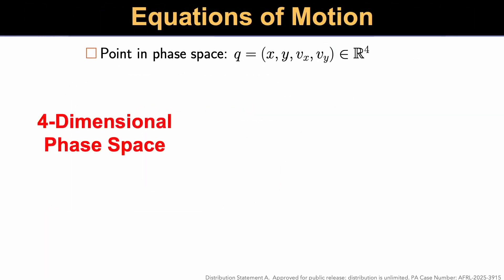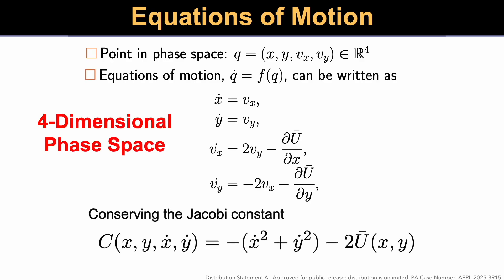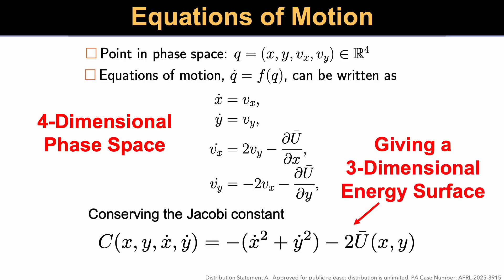The equations of motion are in a four-dimensional phase space, which famously conserve a constant called the Jacobi constant. So for any initial condition, the motion forward in time is limited to a three-dimensional energy surface.